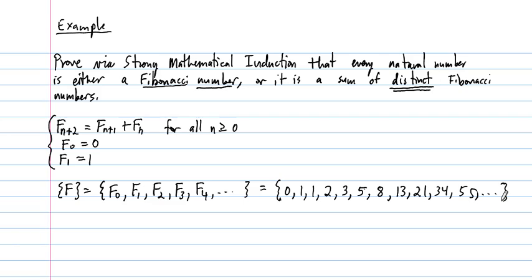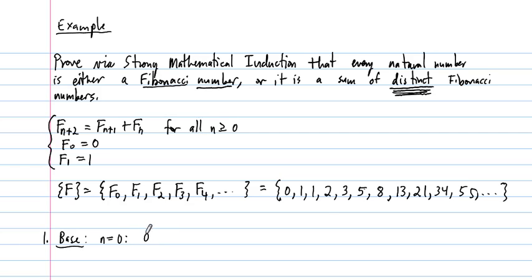We are told to prove this statement using strong mathematical induction, which comes with two or three steps depending on how you think of it. The first step is always to prove the base case. Our base case starts with n = 0, because that's the first index number. And n = 0 is already equal to a Fibonacci number — it's equal to F0. So this number is a Fibonacci number.